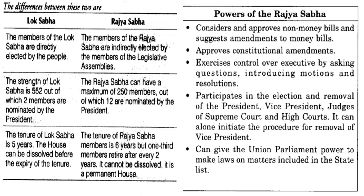Rajya Sabha is the permanent house — you cannot dissolve it like the Lok Sabha. The total term of the members of the Rajya Sabha is six years. As you all know, the term of the Lok Sabha is five years, but for the Rajya Sabha it is six years, and one third of members retire after every two years.